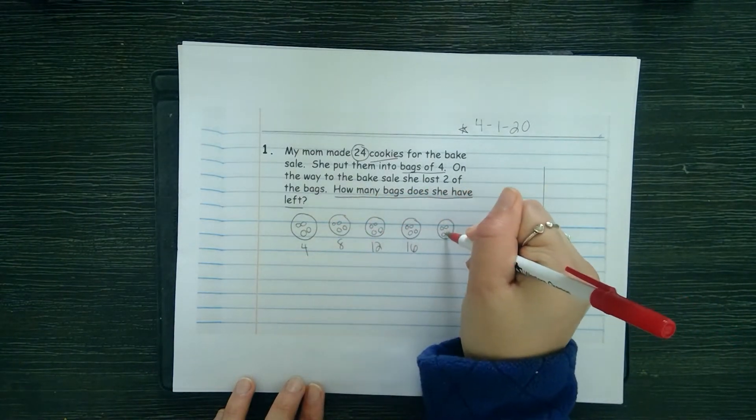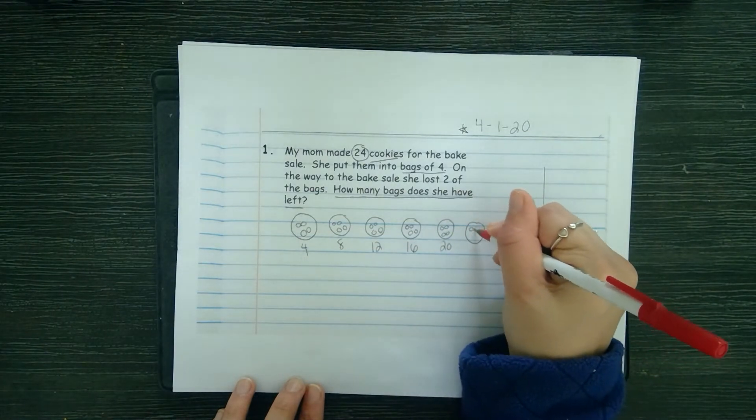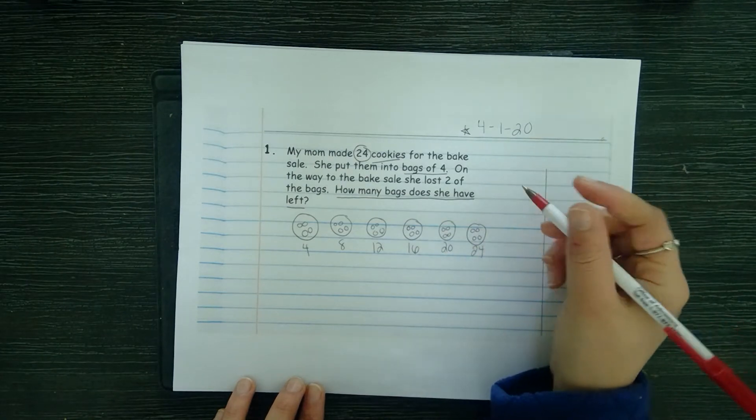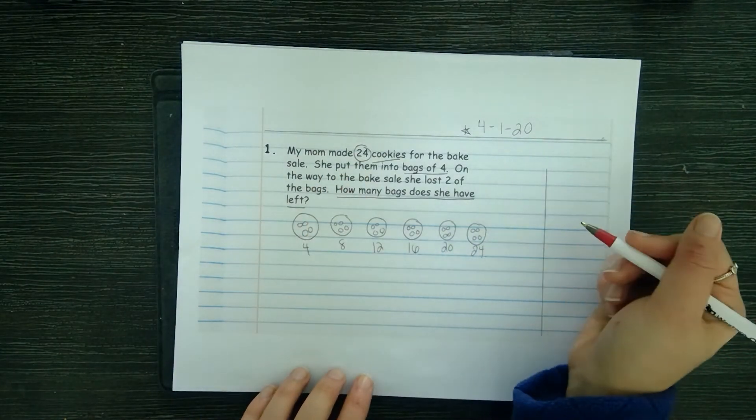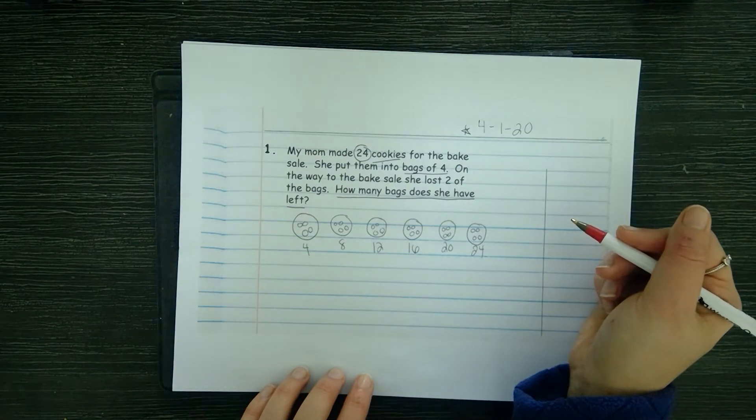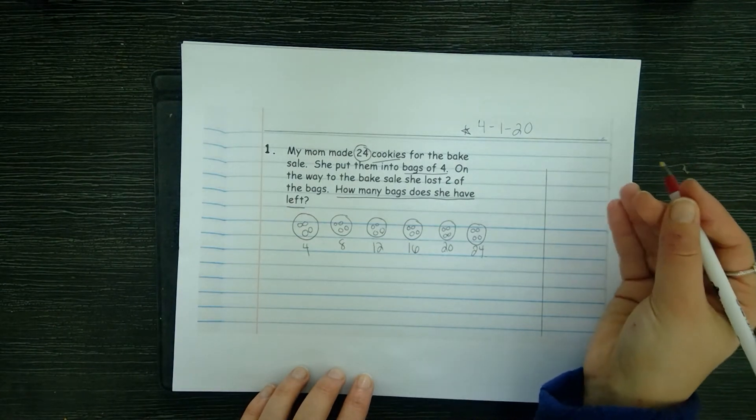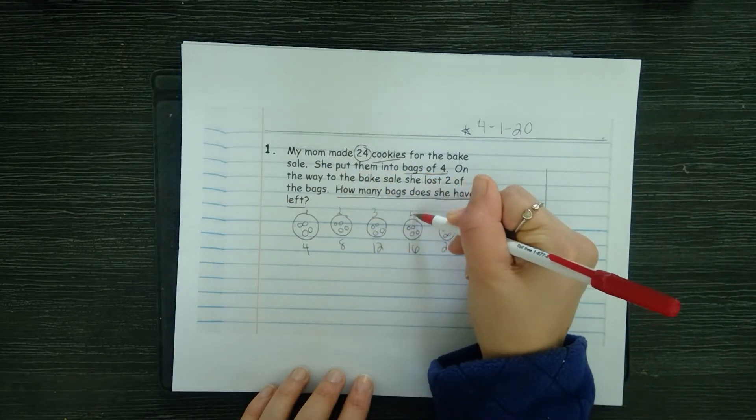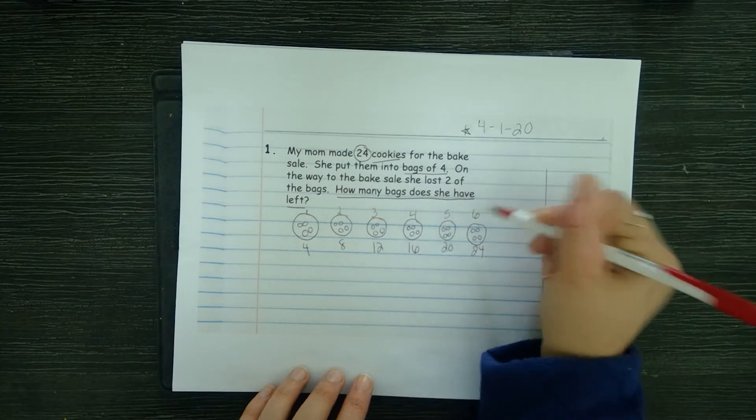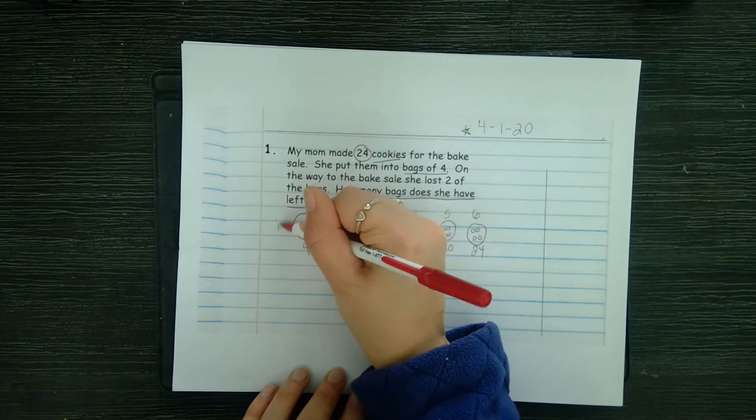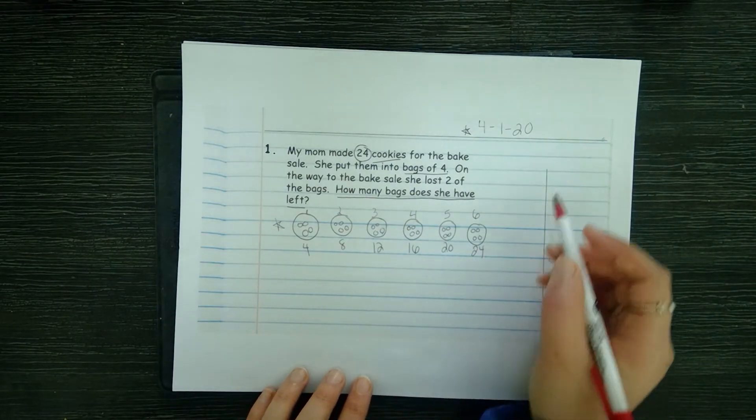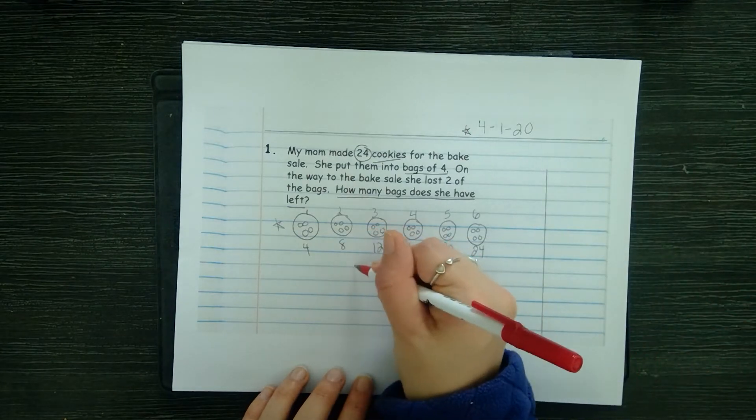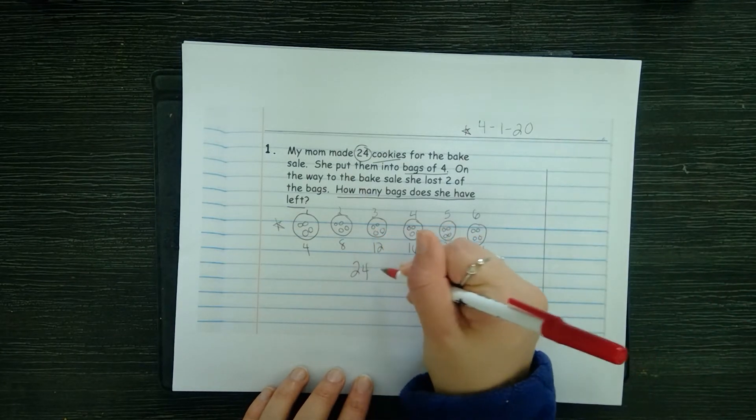I think maybe this might be it. Four, eight... oh you know what, 20 plus four is 24. Hey, those match! Ding ding ding, we found it. How many bags do we have total? I can count these: one, two, three, four, five, six. Give yourself a star if you were able to somehow show this. The equation for this problem would be 24 divided by four equals six.